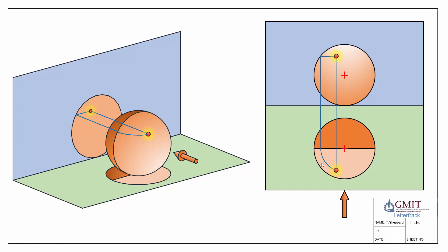If we want to do the same starting from our front elevation, we do exactly the same thing — we just go across the edge, down, and locate it in our edge view, then rotate around. It's exactly the same process just starting from a different position. That's how to locate a point on a sphere.